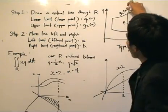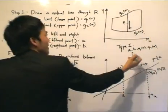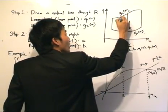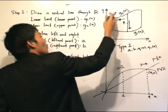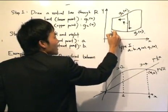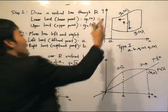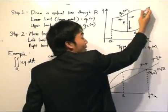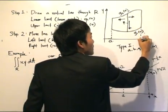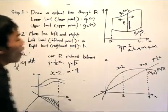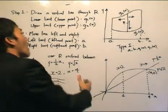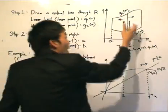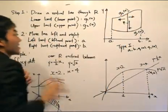That covers G1(X) and G2(X). For the left and right limits, A and B lie on the X-axis. We move the vertical line left until we reach the leftmost point of region R — that is A. Then we move the line right until we reach the rightmost boundary — that is B. So to summarize: draw the vertical line, go down for G1(X), go up for G2(X), move left and right for A and B. It's as easy as that.